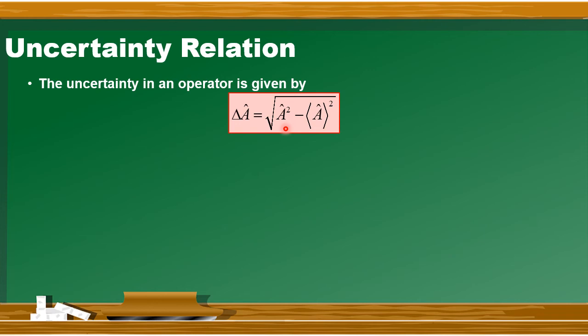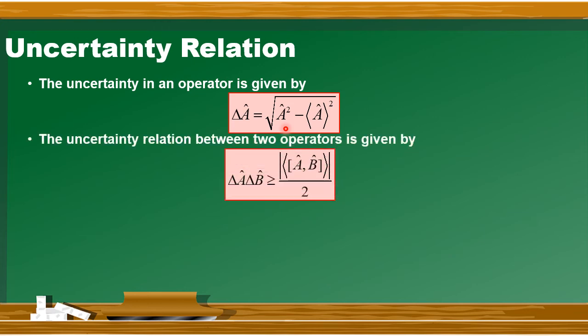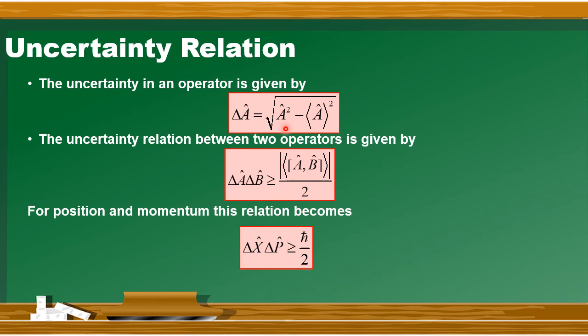دو operators کی uncertainty دیکھنی ہو تو دونوں کا product یہ بنے گا: ΔA · ΔB ≥ |⟨[A, B]⟩| / 2۔ اسکو particular case میں apply کیا جا سکتا ہے — position اور momentum کا۔ Position اور momentum پر یہ relation apply کرنے سے: ΔX · ΔP ≥ ℏ/2۔ یہ Heisenberg uncertainty relation ہے۔